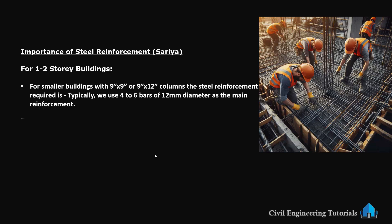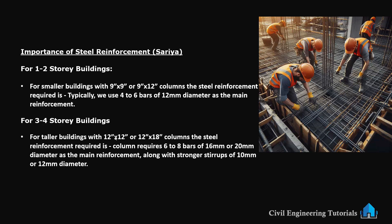The stirrups are typically 8 mm or 10 mm diameter steel placed at 6 inch intervals to provide extra strength. For 3 to 4 storey buildings, we need more reinforcement due to the increased load. A 12 inch by 12 inch or 12 inch by 18 inch column requires 6 to 8 bars of 16 mm or 20 mm diameter as the main reinforcement, along with stronger stirrups of 10 mm or 12 mm. For example, in a 4 storey building you might use 6 bars of 16 mm steel with 10 mm stirrups spaced at 6 inch intervals, ensuring the column can carry the weight of multiple storeys safely.